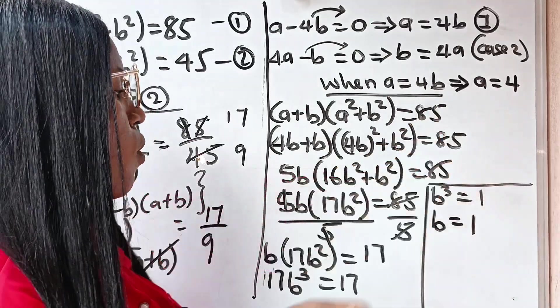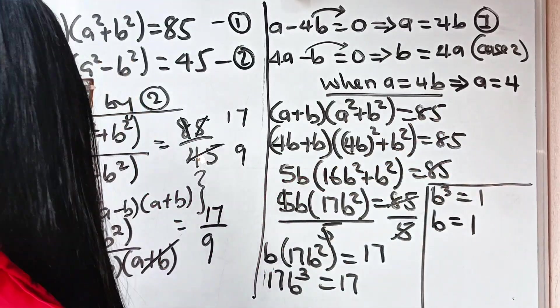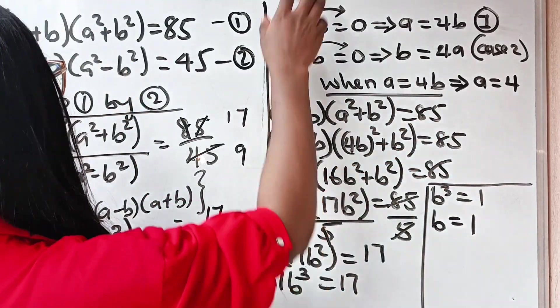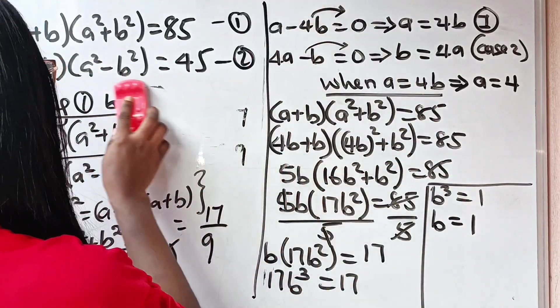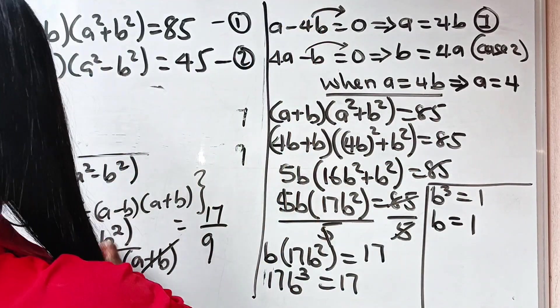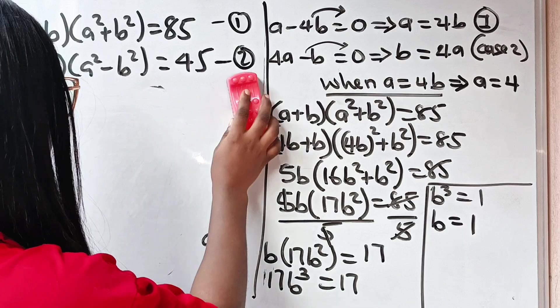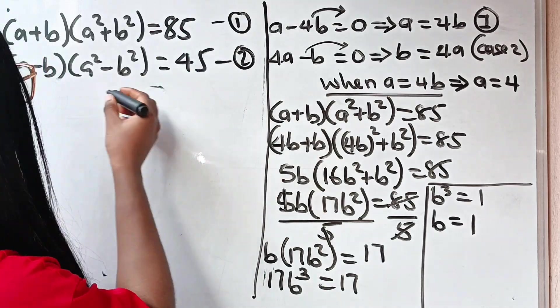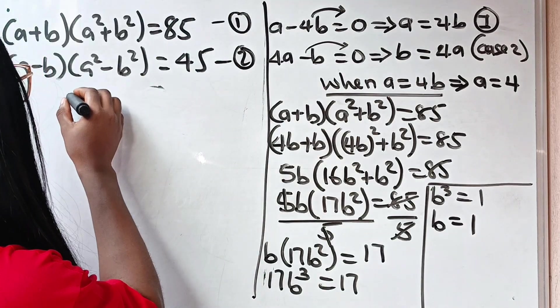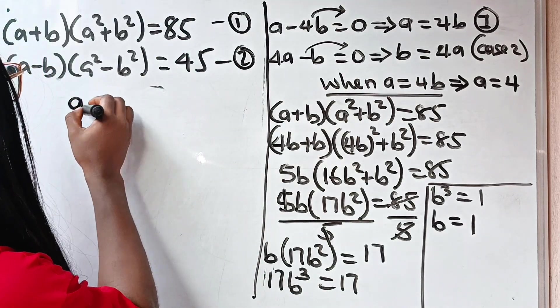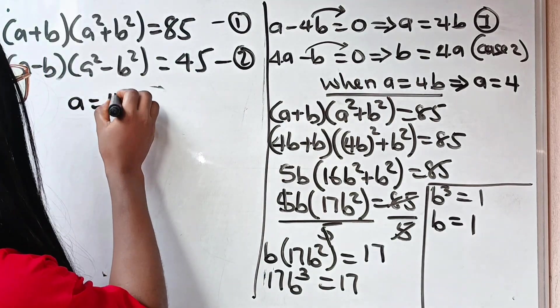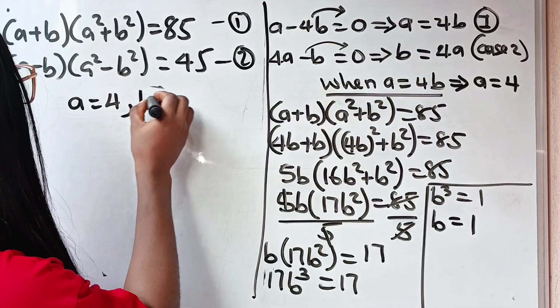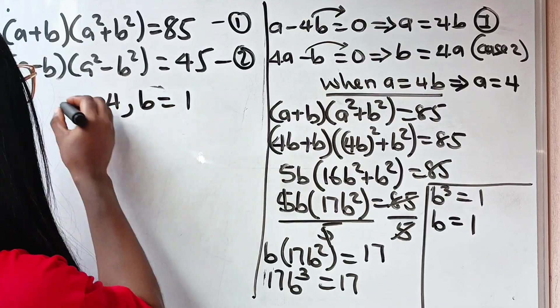So when a equals 4, b equals 1. Let's note that down because we will come back to it. So we have a equals 4 and b equals 1 for the first case.